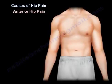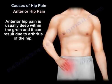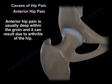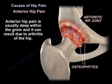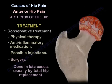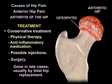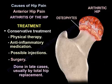Anterior hip pain is usually deep in the groin and can result from arthritis of the hip. The treatment is usually conservative, with physiotherapy, anti-inflammatory medication, and possible injections. Surgery is done in late cases, usually by total hip replacement.